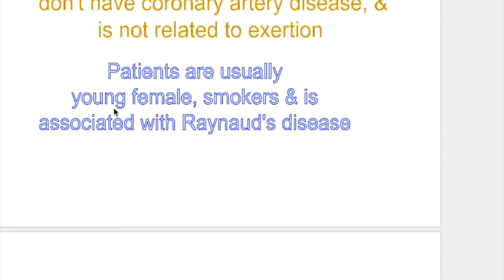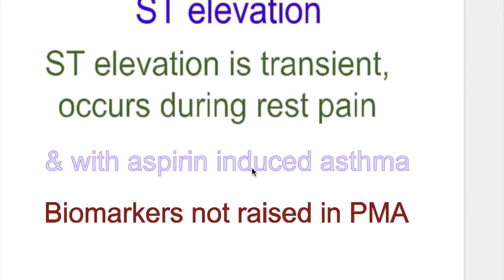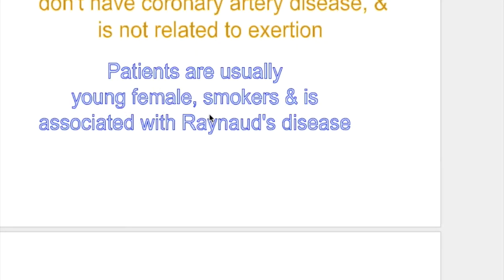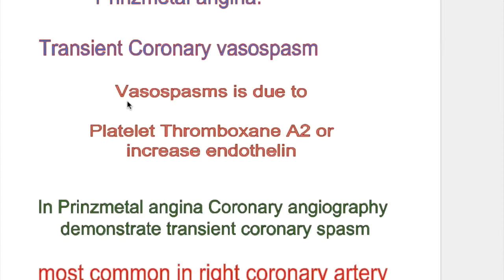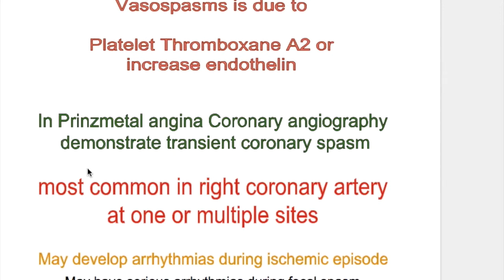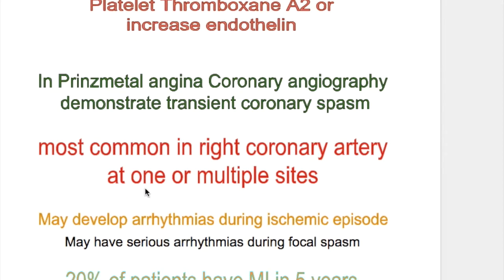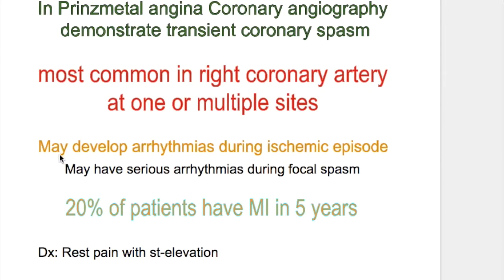Prinzmetal angina patients are usually young female smokers and it is associated with Raynaud's disease and aspirin-induced asthma, whereas transmural infarct patients are older and not associated with Raynaud's disease or peripheral vascular disease. In Prinzmetal angina, there is transient coronary spasm due to platelet thromboxane A2. Coronary angiography demonstrates transient coronary spasm, most commonly in the right coronary artery at one or multiple sites. Prinzmetal angina patients may develop arrhythmias during the ischemic episode.